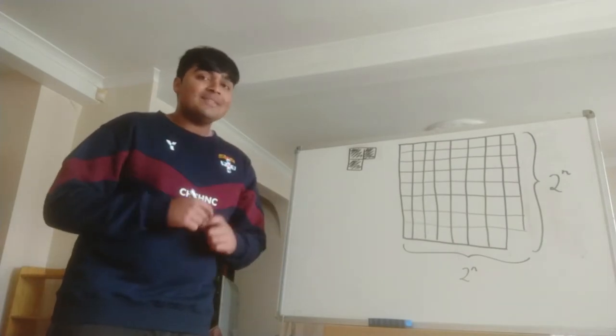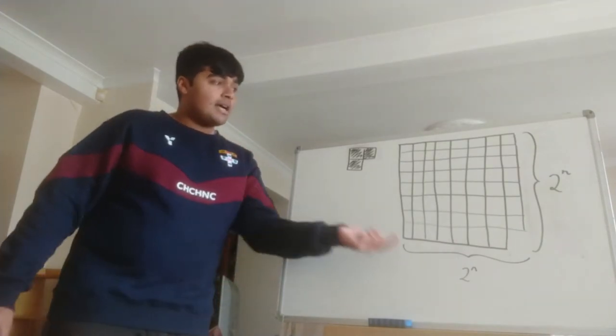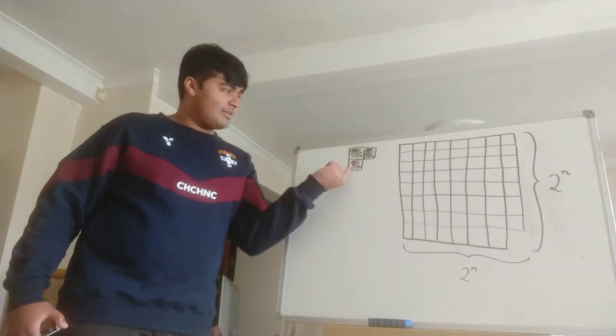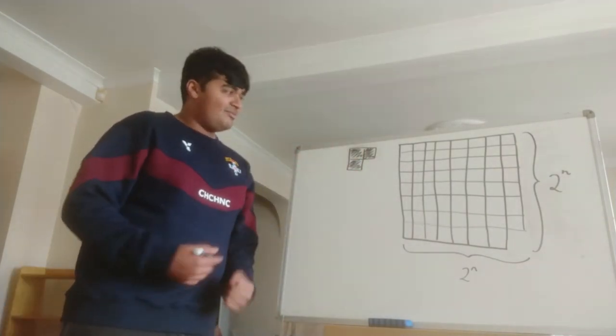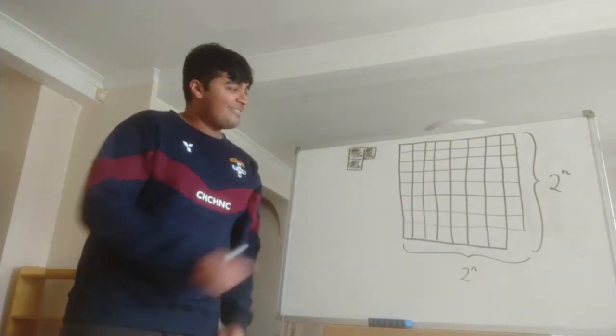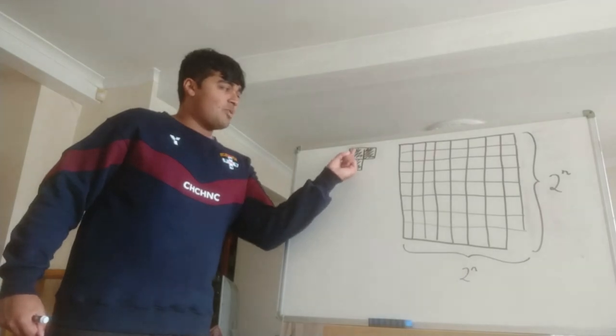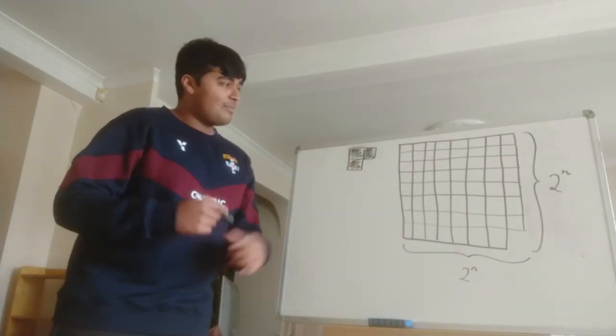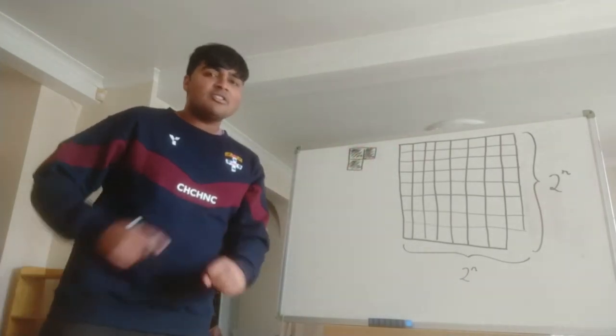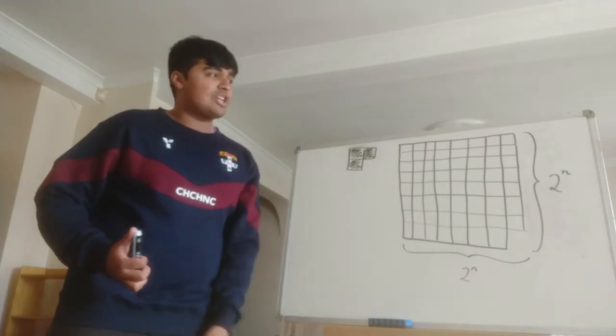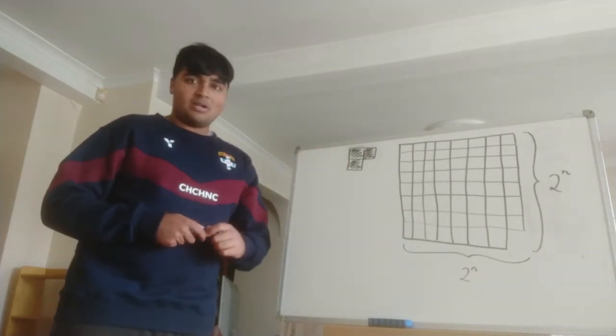What we want to know is, is it possible to cover this chessboard with these shapes? This right-angle piece has three squares - one here, one up, and then one across. Can we cover this chessboard using these tiles so that none overlap and every single square is covered by one of the pieces?